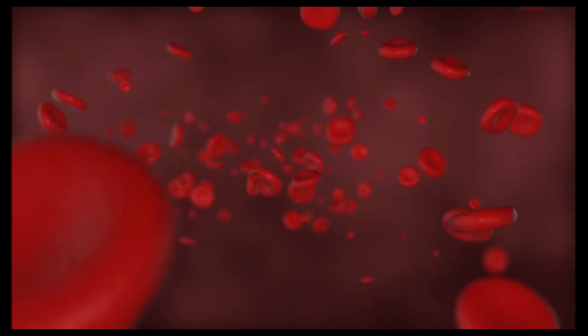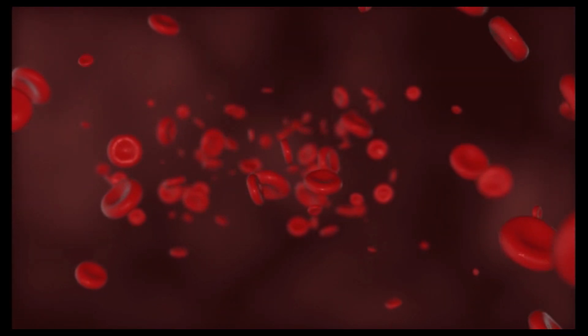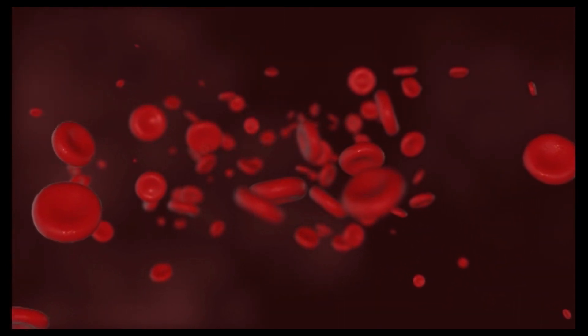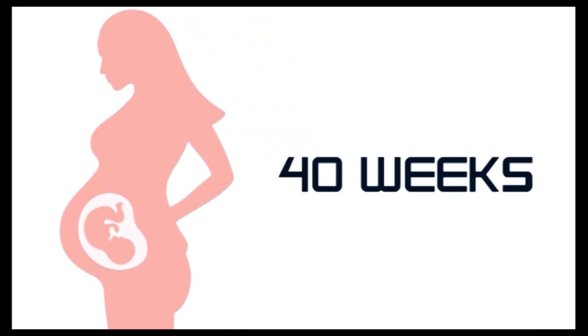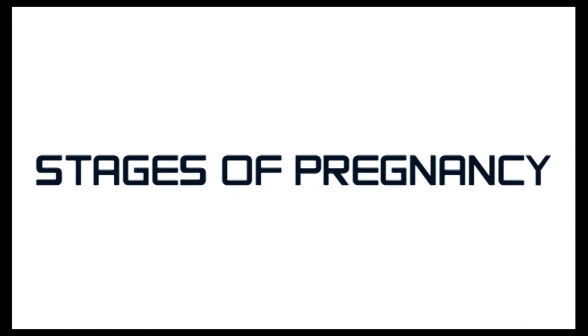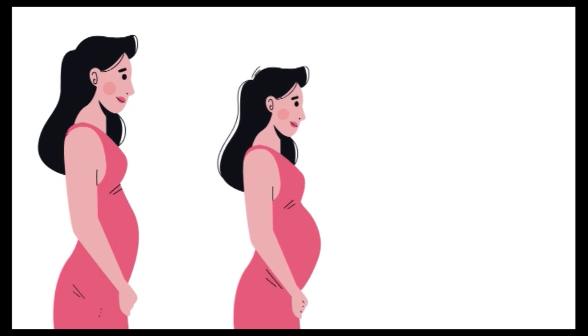Within 24 hours after fertilization, the zygote rapidly divides into many cells: 1 divides into 2, 2 into 4, 4 into 8, 8 into 16, and so on. The pregnancy period of a human being is about 40 weeks, which is roughly about 270 plus or minus 7 days. This time is divided into 3 stages called trimesters, and each trimester is a set of about 3 months.